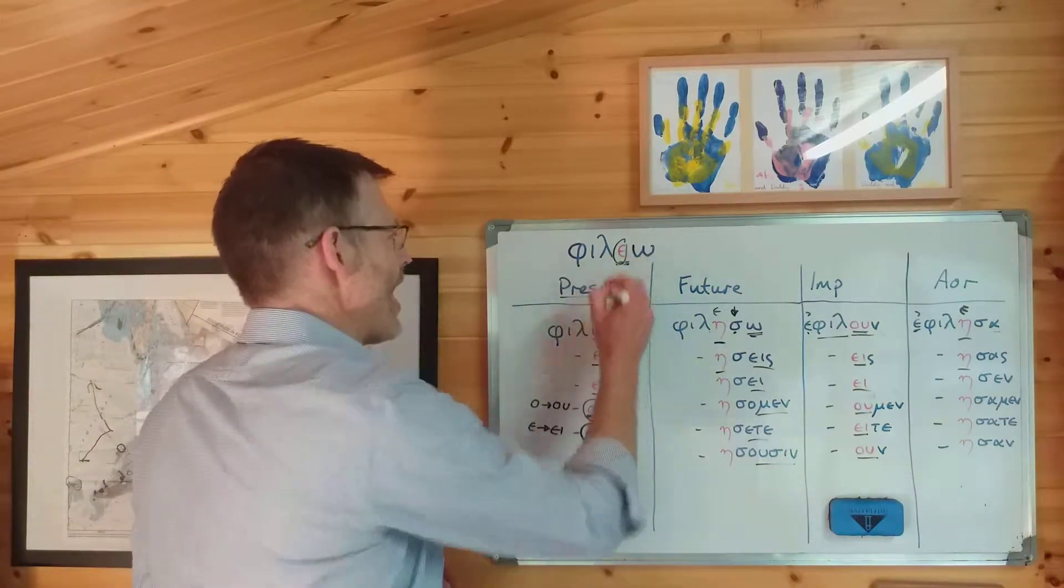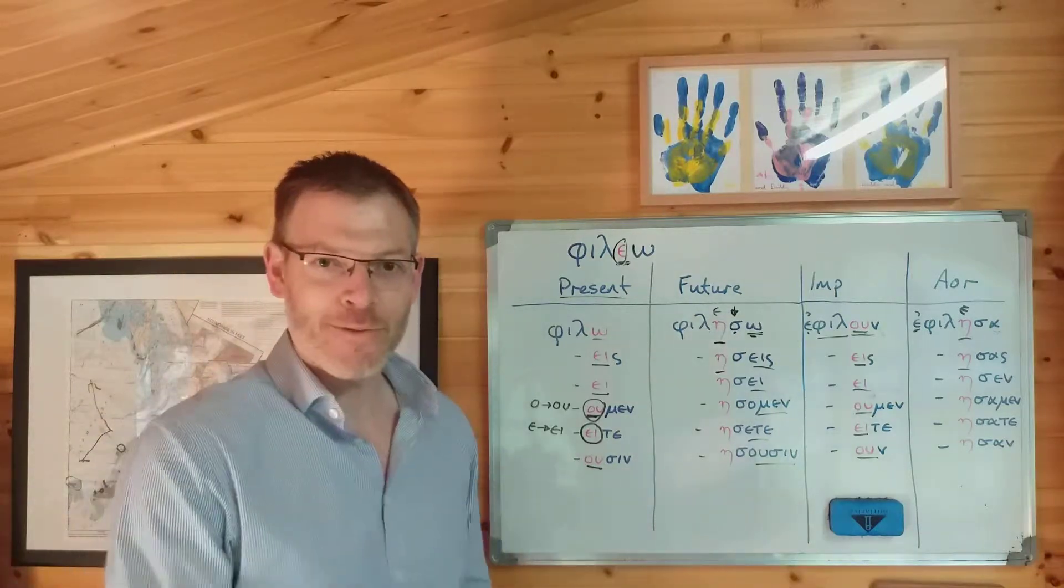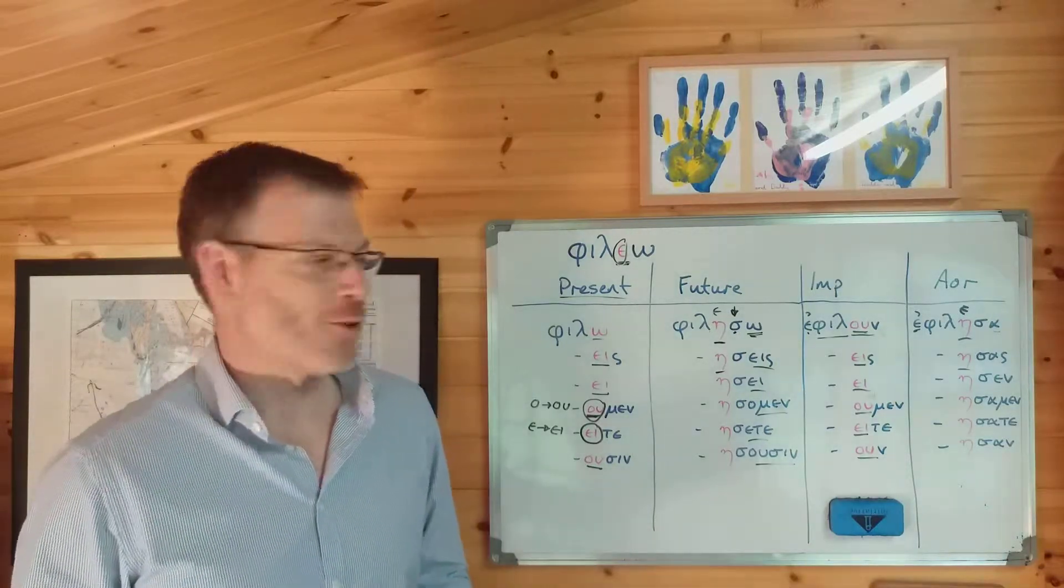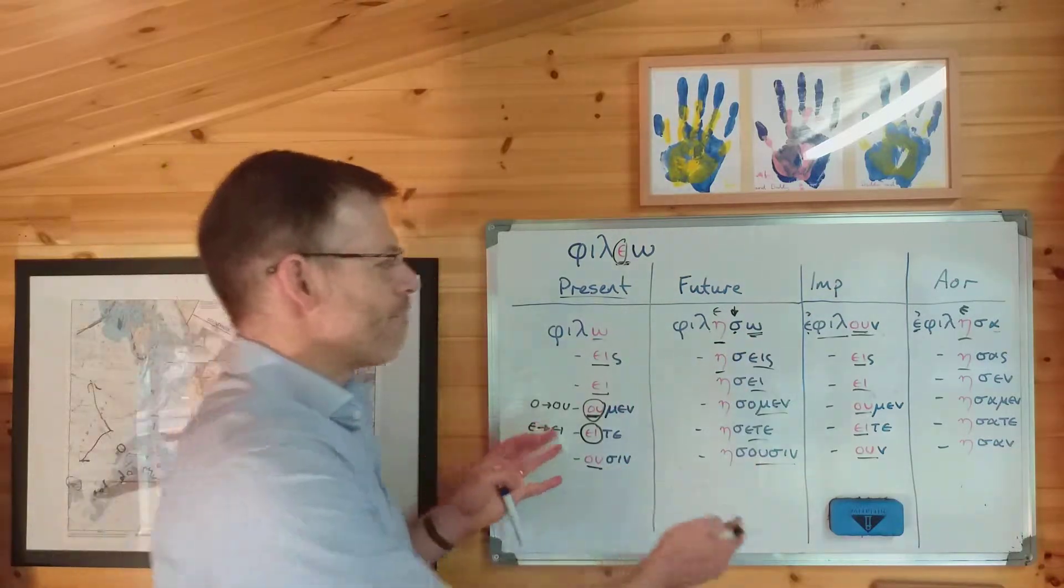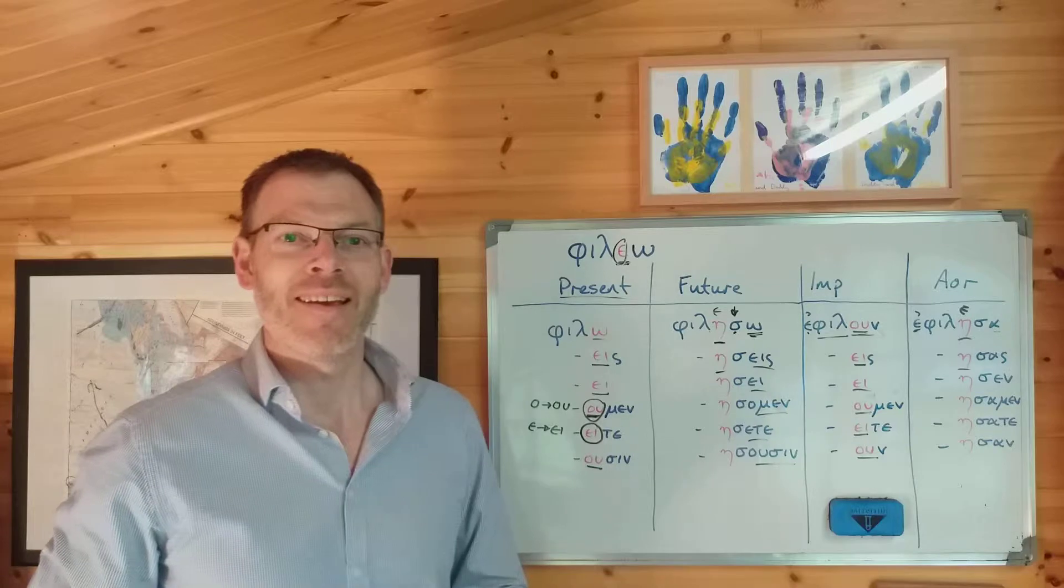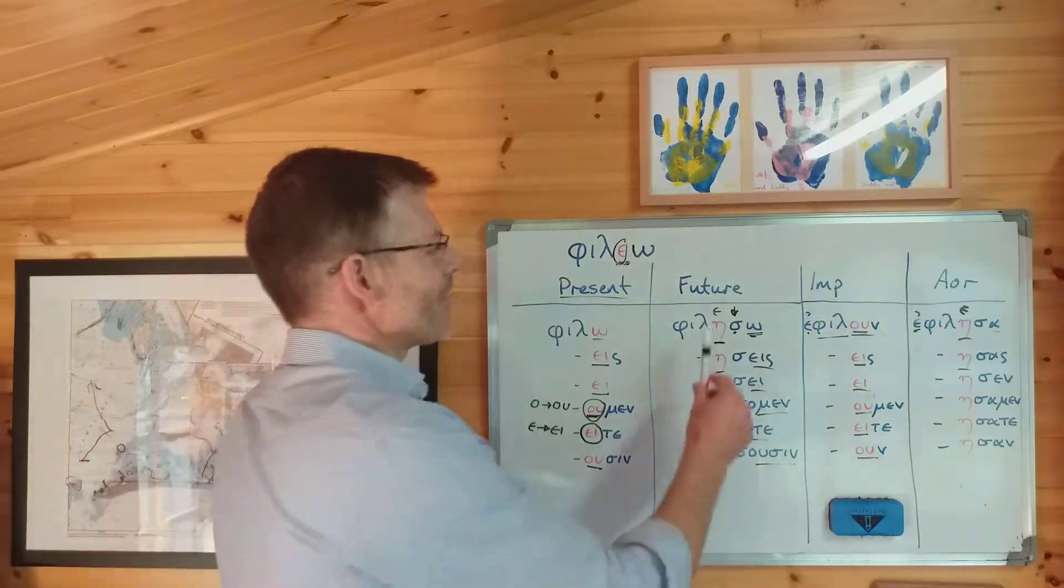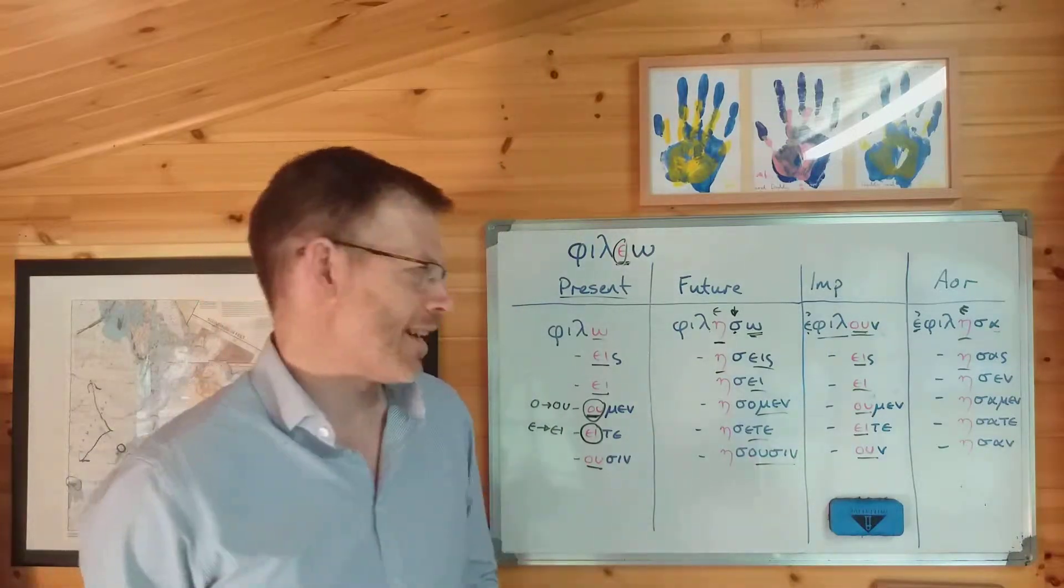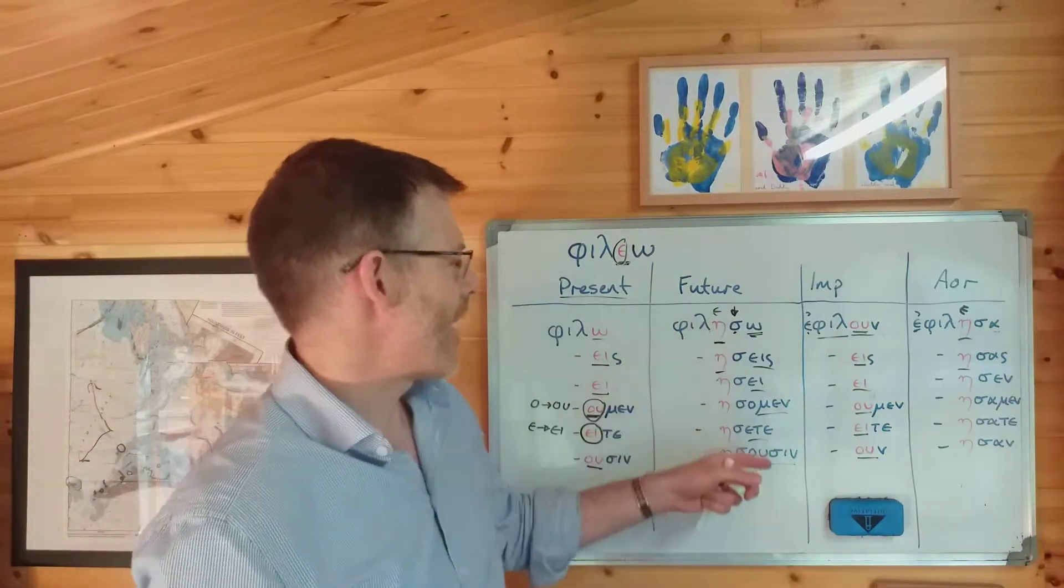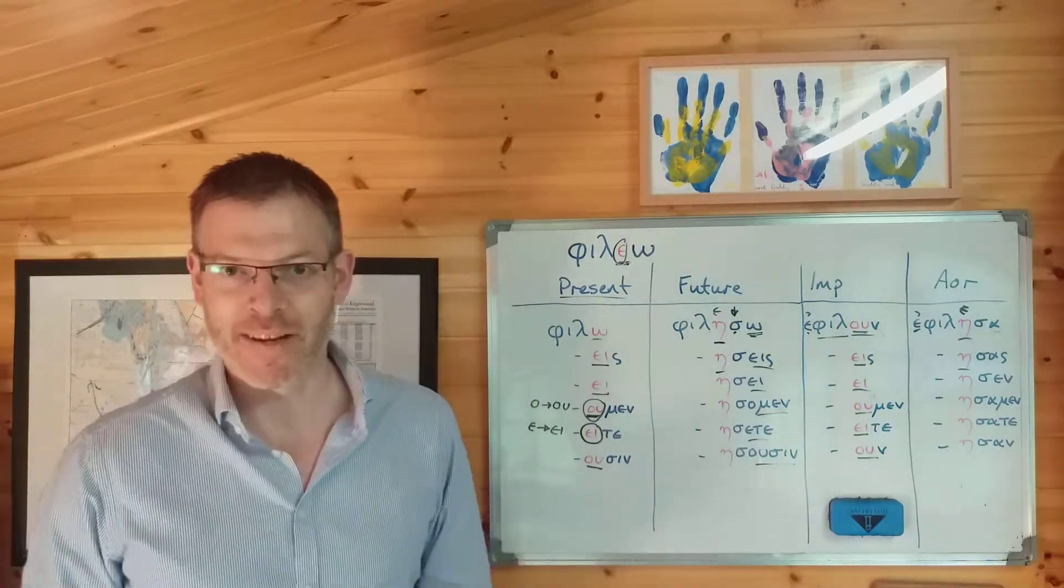Always, always, always, the epsilon being weak wants to be long, either part of a diphthong or turning into a long vowel. You accomplish that in the present and the imperfect by combining it with something, with the beginning of the ending where necessary to make it long. You can't do that in the future in the aorist, so it just goes long anyway, becomes an eta, and that goes before the sigma in the usual way, and then the ending remains unchanged.